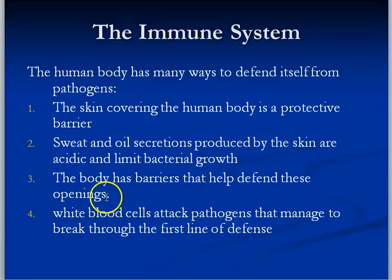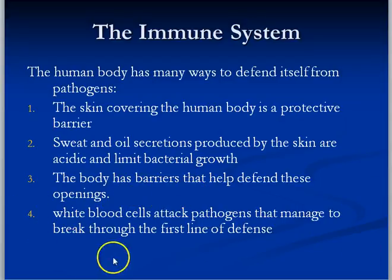We have a whole bunch of barriers to help defend openings: eyelashes, tears, hair in our nose, and hairs in our ears — those prevent bacteria from getting into the cells that line those tissues. Even in our digestive system, if you ate a hot dog with bacteria on it, the acidic environment in the stomach would kill off the majority of that bacteria. Finally, white blood cells kill pathogens that make it through the first line of defense.